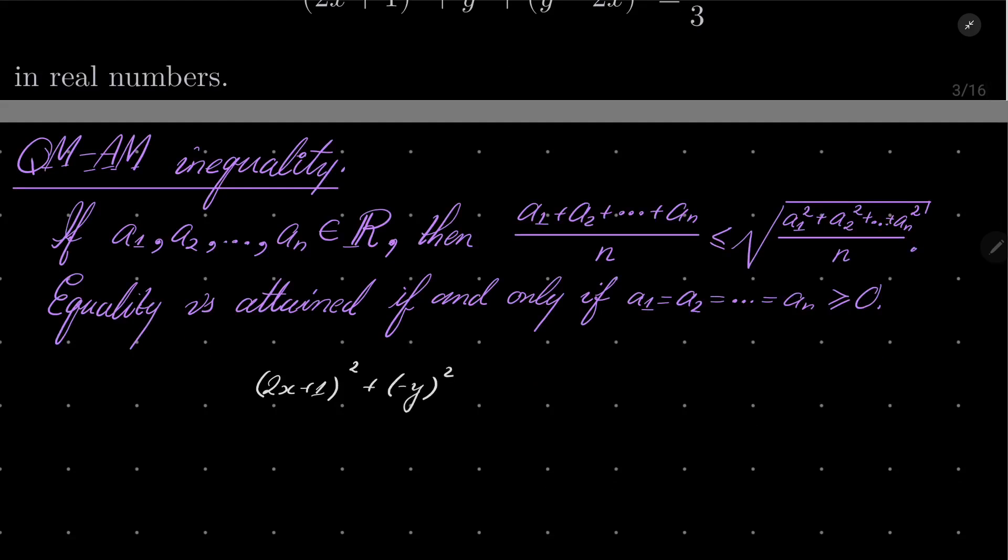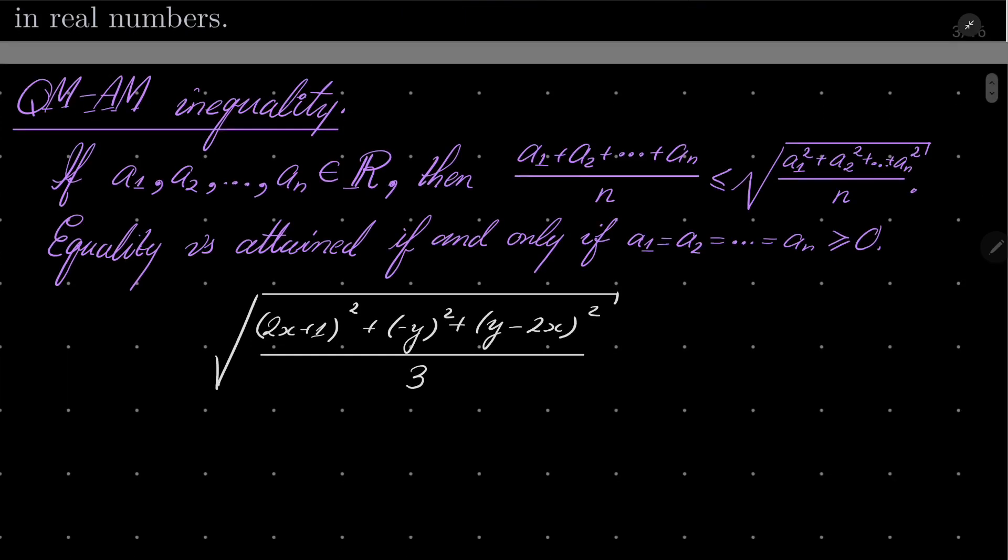Plus (y - 2x)². I will divide this expression by 3 and I will take the square root. By the QM-AM inequality, I know that this is greater than or equal to just the arithmetic mean of these numbers.